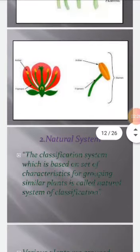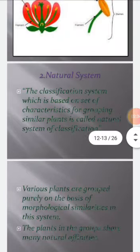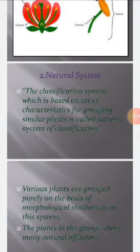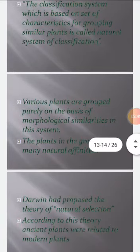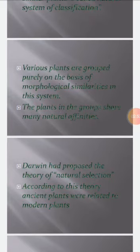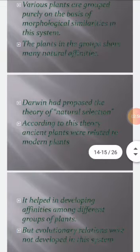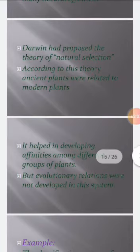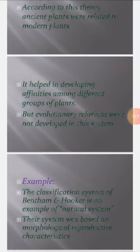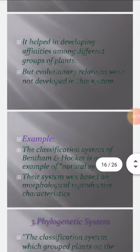The second system is the natural system. This classification system is based on a set of characteristics for grouping similar plants. Various plants are grouped purely on the basis of morphological similarities. The plants in the group have many natural affinities among them. Darwin had proposed the theory of natural selection; according to this theory, ancient old plants were related to modern plants. It helped in developing affinity relations among different groups of plants, though evolutionary relations were not fully developed in this system. An example is the classification system of Bentham and Hooker, which was based on morphological and reproductive characteristics.